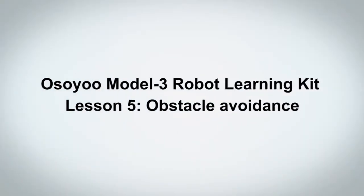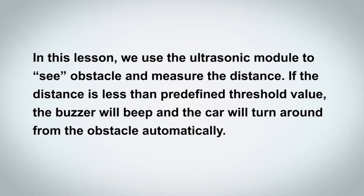Welcome to OSIO Model 3 Robot Learning Kit Lesson 5, Obstacle Avoidance. In this lesson, we use the ultrasonic module to see obstacles and measure the distance. If the distance is less than a predefined threshold value, the buzzer will beep and the car will turn around from the obstacle automatically.